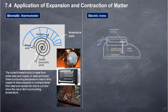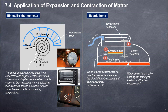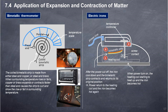Electric irons: the three major components are 1) the heating coil to heat up the iron, 2) the temperature controller to set the desired temperature, and 3) the bimetallic strip that bends to cut off the power supply to the heating coil when the temperature of the iron exceeds the preset temperature. When power is turned on, the heating coil starts to heat up and the iron becomes hot. When the iron becomes too hot (over preset temperature), the bimetallic strip expands and curves upward, cutting off power. After the power cuts off, the iron cools down, the bimetallic strip contracts and returns to its original position, and power returns to the heating coil. The bimetallic strip repeatedly expands and contracts to maintain the iron at the preset temperature.